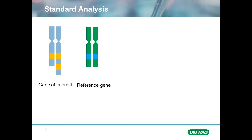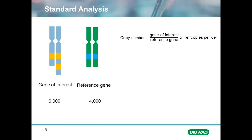In practice, this is a very simple process. In this example, let's say we count 6,000 copies of our gene of interest, 4,000 of our reference gene, and that this reference gene is normally present in two copies per cell. Our copy number for this sample is the number of copies of our gene of interest divided by the number of copies of our reference gene, multiplied by the number of reference copies present in each cell. In our example, this would equate to 6,000 divided by 4,000 multiplied by 2, which equals 3. Our average copy number per cell would be 3.